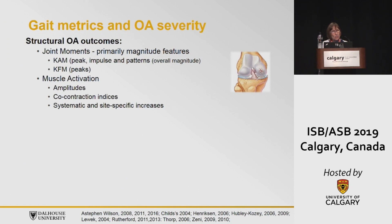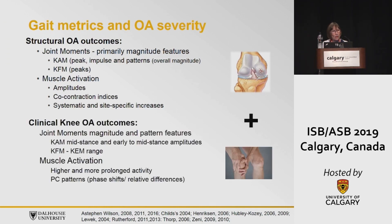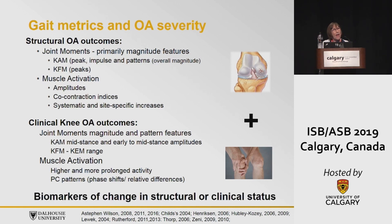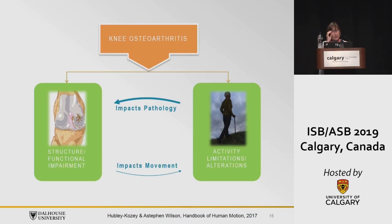In summary, there are differences between structural OA outcomes and clinical OA outcomes when looking at severity changes. With clinical OA outcomes, we see more prolonged activity, less unloading of the joint, and we don't have those nice biphasic patterns seen in asymptomatic individuals. These represent biomarkers of changes in structural or clinical status that we can use to monitor people's status as they progress along either a structural or clinical OA severity level.